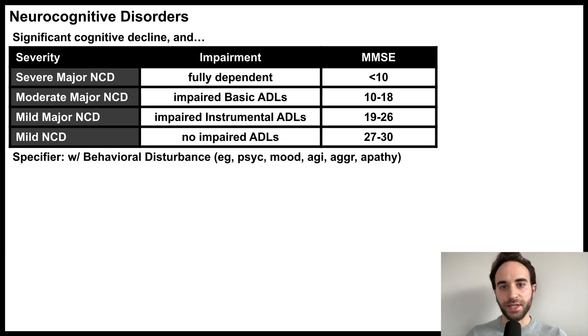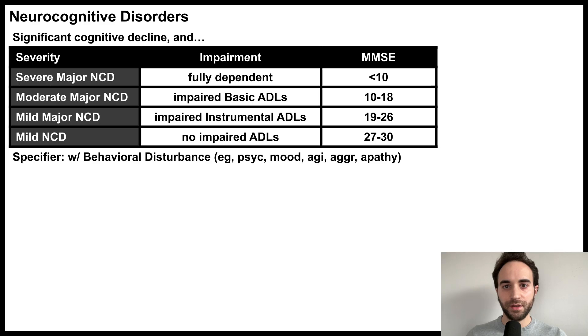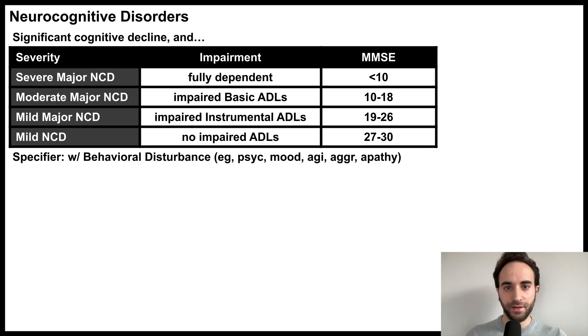These disorders can also be associated with other psychiatric symptoms, such as psychosis, mood changes, agitation, aggression, or apathy, which can be indicated with the With Behavioral Disturbance specifier.